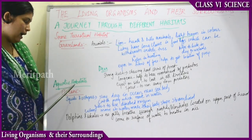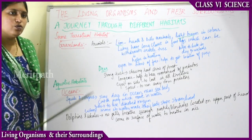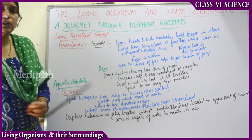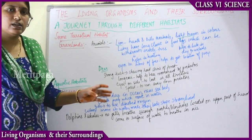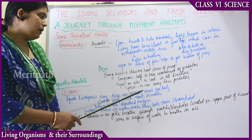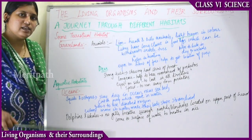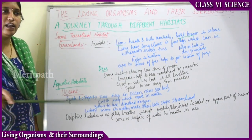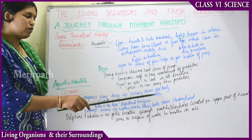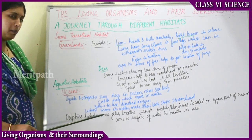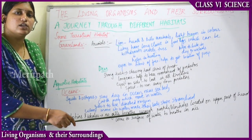Next, we move on to aquatic habitats. In aquatic habitats, we have oceans. We have already studied adaptations in fishes; now we will look at squids and octopus. Squids and octopus stay very deep in the ocean, near the bed of the sea. They catch prey that moves around near them in the water for food.